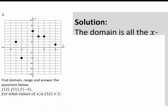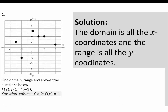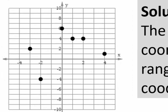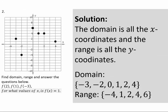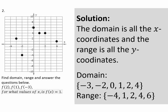Let's look at the solution. Domain is all the x coordinates; range is all the y coordinates. Look at your graph — what x coordinates does it span? That's the domain. What y coordinates does it span? That's the range. We can list all the x coordinates for which there are points on the graph: negative 3, negative 2, 0, 1, 2, and 4. For range, all the y coordinates: negative 4, 1, 2, 4, and 6.